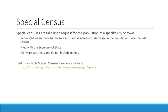Special censuses are definitely the least used of all the censuses, mostly because people just don't realize they exist. Special censuses are taken upon request for the population of a specific city or town in Missouri, generally when there has been a substantial increase or decrease in population since the last census and the city or town wants to change their categorization according to Missouri state law. These have to be filed with the Secretary of State, which is why we have copies of them. Many are just abstracts without names, but those that do include names have been indexed and are in our database.